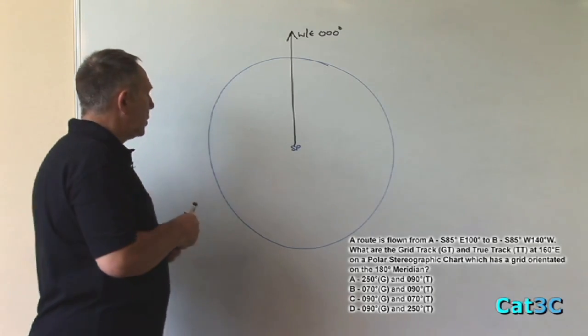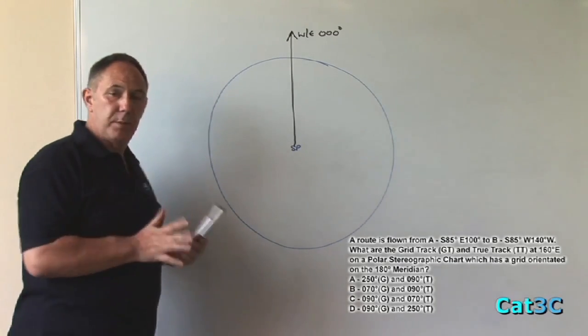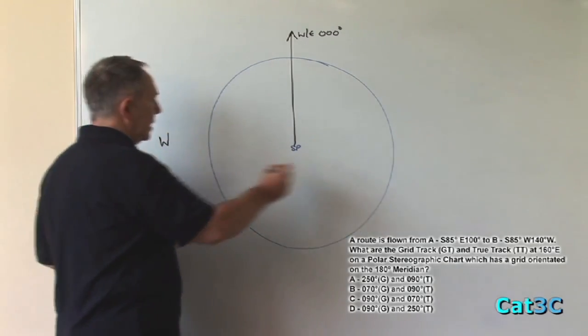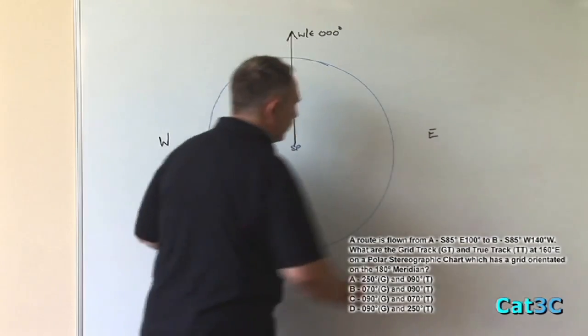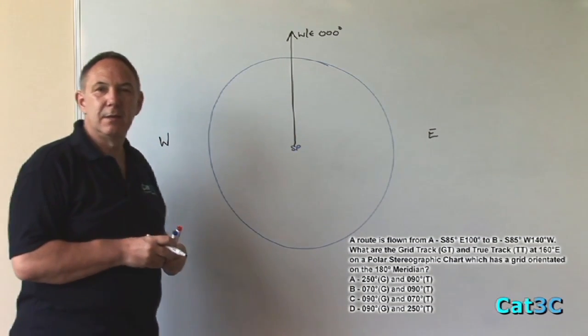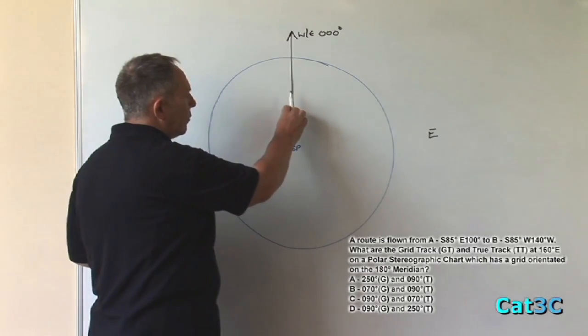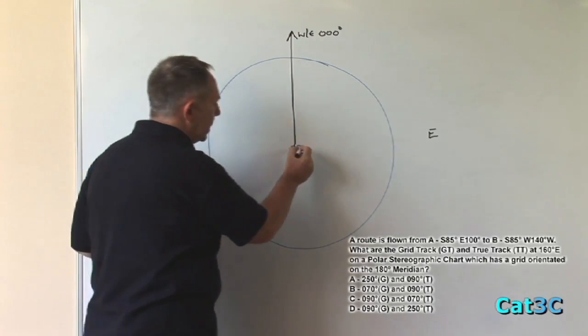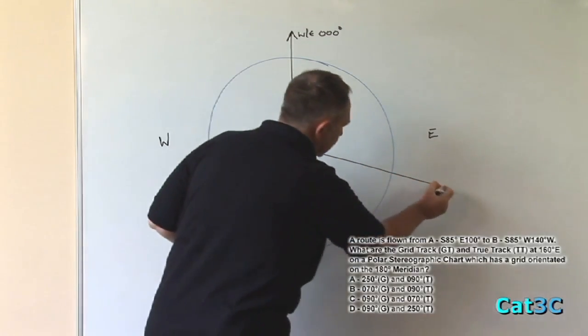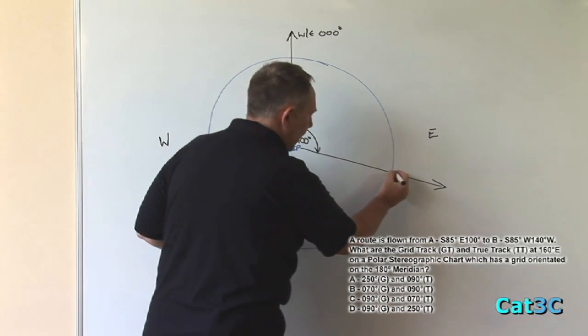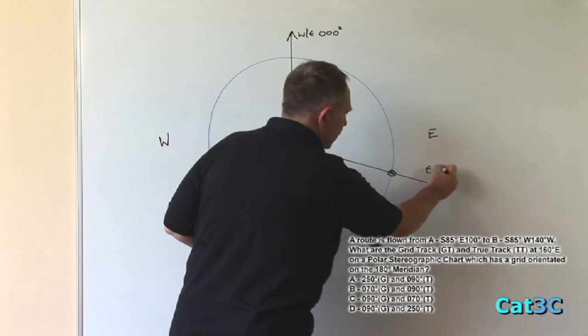Now we plot on the two local meridians. Remember with all polar stereographic problems, west is on the left and east is on the right. So A is found at south 85 east 100. 100 degrees to the east from the Greenwich meridian is approximately across there. So that angle is 100 degrees, making this position for A at east 100.